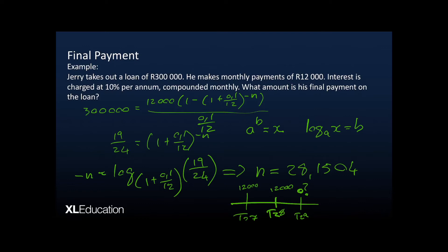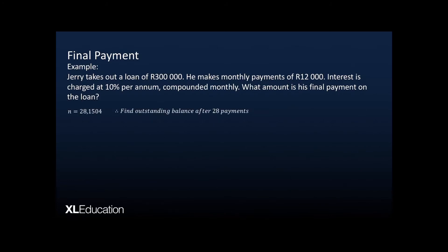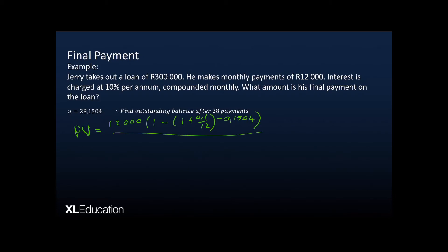We now find the outstanding balance after the 28th payment. The outstanding balance is always the present value of the payments still to be made. In this case, we still have 0.1504 payments remaining, so n is negative 0.1504 and the interest rate remains the same. Putting everything into our formula, we find that after the 28th payment, the outstanding balance is 1,796 rand and 20 cents.